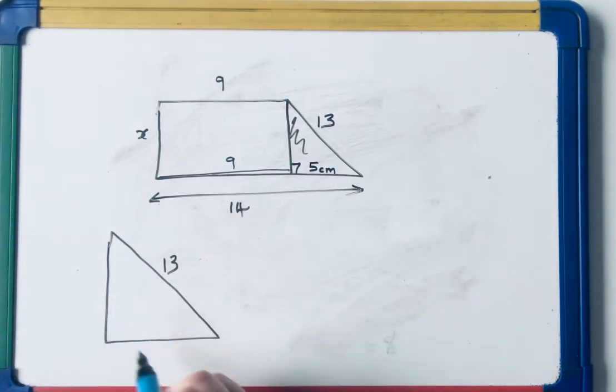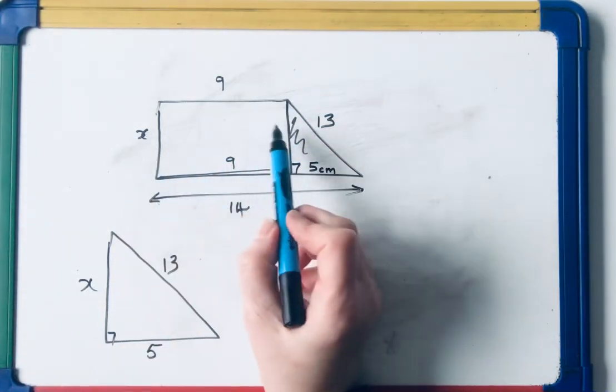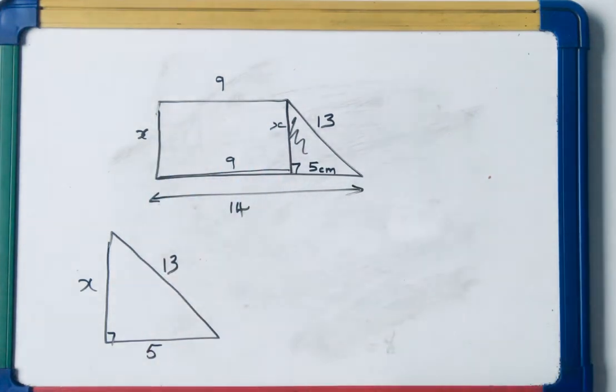So the hypotenuse is 13, the short side is 5, and I want to find the height. Opposite sides of a rectangle are equal. So if that's x, that's also x.